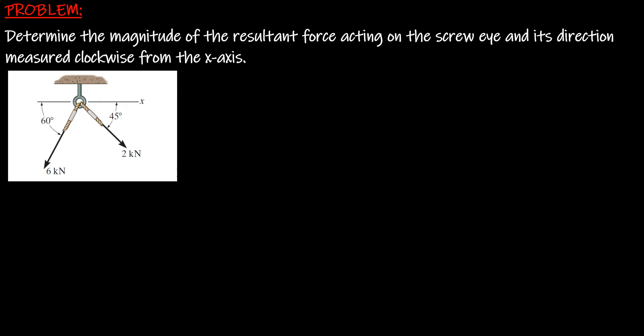In this problem we are asked to determine the magnitude of the resultant force acting on the screw and its direction measured clockwise from the x-axis. We are given a figure with two ropes connected to the screw: one rope pulled with a force of 2 kilonewtons at 45 degrees from the x-axis, and the second rope pulled at 6 kilonewtons at 60 degrees. We will use the parallelogram law to find the resultant force.